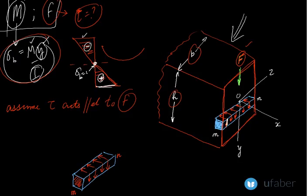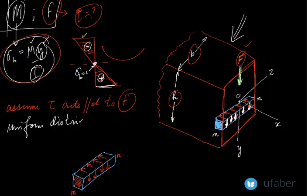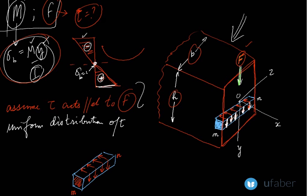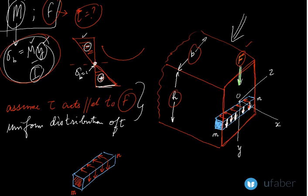The second assumption is that the shear stress distribution is uniform across the width of the beam — that is, tau is uniformly distributed across the width. These two assumptions form the backbone of this analysis.